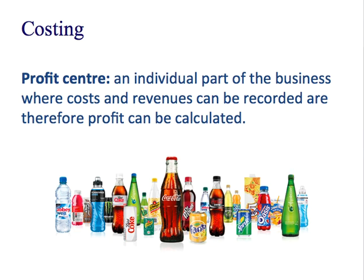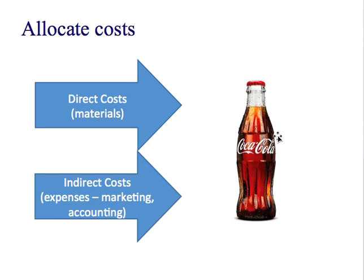The direct costs are going to be quite easy to allocate to each product range, because we can calculate how much does the glass bottle cost to make for this particular product and how much the ingredients cost. But it's the indirect costs that are going to be quite difficult. So the marketing for the whole Coca-Cola company is going to be hard to break down — for example, employing the marketing managers unless they're only ever working on one product range. And the accounting department as well — how do you allocate their salaries to one profit centre? It's going to be very difficult.